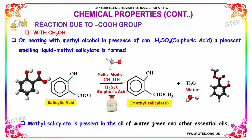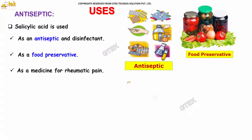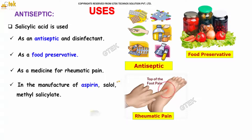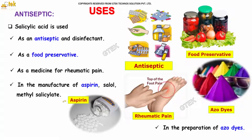Uses: it is used as an antiseptic and disinfectant. It is also used as a food preservative. It is used in medicine for rheumatic pain. It is used in the manufacture of aspirin, cellol, and methyl salicylate.